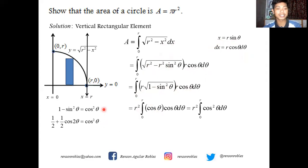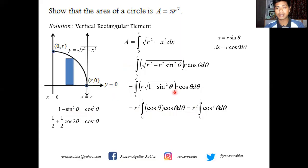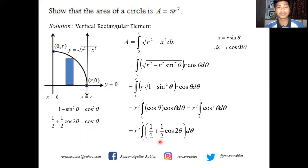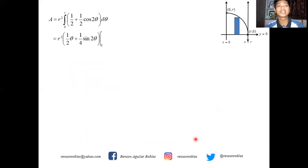Since there is no direct formula for ∫ cos²θ dθ, we use the half-angle identity: cos²θ = 1/2 + (1/2)cos 2θ. So we have r² ∫(1/2 + (1/2)cos 2θ) dθ. Integrating: the integral of 1/2 dθ is (1/2)θ, and the integral of (1/2)cos 2θ is (1/4)sin 2θ. This gives r²[(1/2)θ + (1/4)sin 2θ] evaluated from 0 to r.